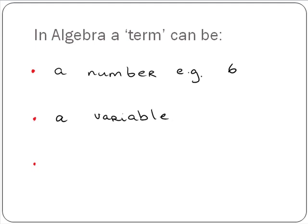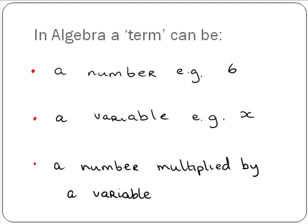Or it can be a variable. So all our letters. So for example, x. Or it can be a number multiplied by a variable. So for example, 3A.